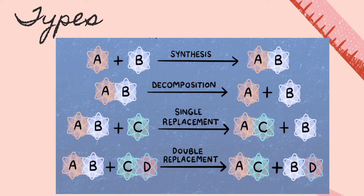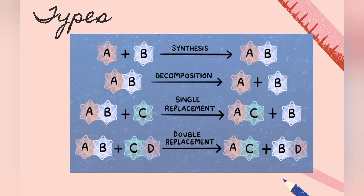Next, we have decomposition reaction. A decomposition reaction works quite the opposite to a synthesis reaction. It is a reaction where a more complex substance breaks apart into simpler ones. A general form of a decomposition reaction can be written as AB to form A plus B.